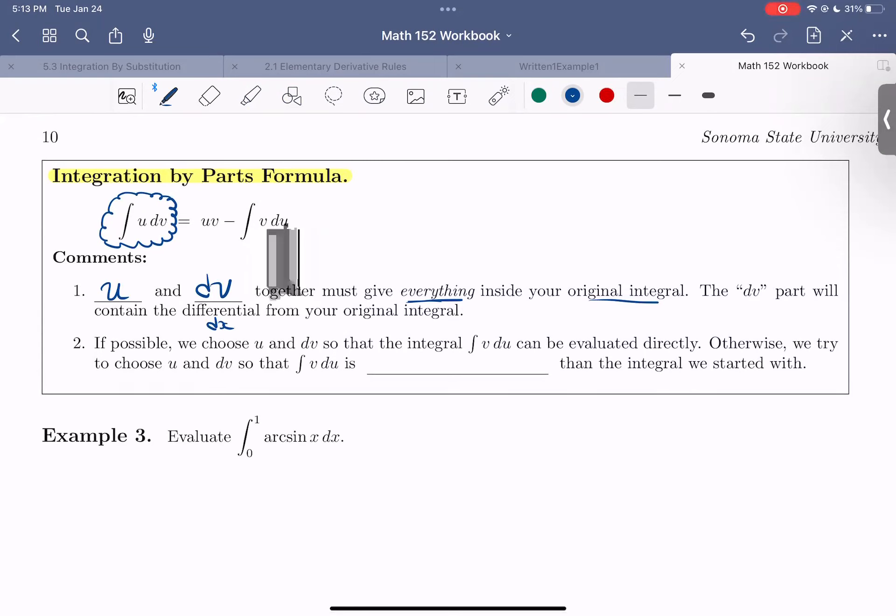Now, if possible, we want to choose our u and our dv so that the new integral that pops up, the integral of v du, can be evaluated directly, so it's simpler. Otherwise, we try to choose a u and a dv so that the integral of v du is simpler than the integral we started with.